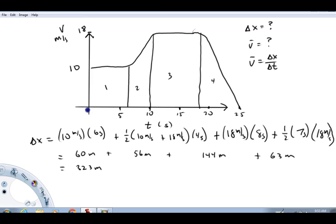And now to find the average velocity, we'll take our total displacement, 323 meters, divide by our total time, 25 seconds, and I get approximately 12.9 meters per second. So I hope this video demonstrates how to find a total displacement from a velocity graph by using concepts of area and how to find the average velocity during the time interval. Have a great day.